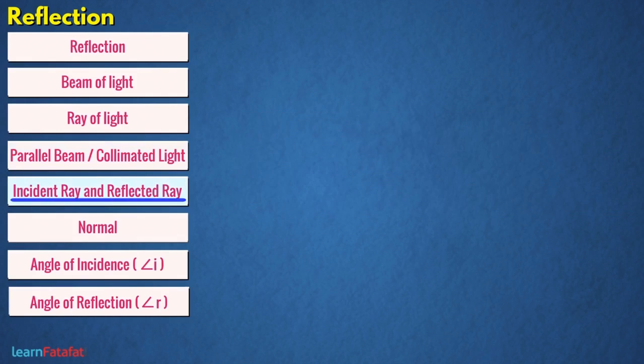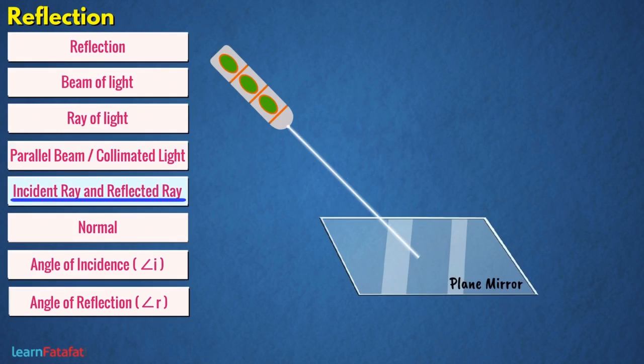Incident ray and reflected ray: if you place a strip of plane mirror in the path of a ray of light, then you can observe the ray striking the surface of the plane mirror and then bending of ray from the plane mirror.